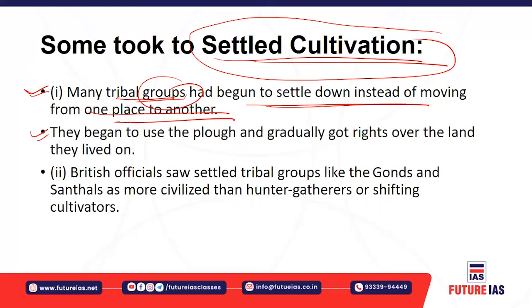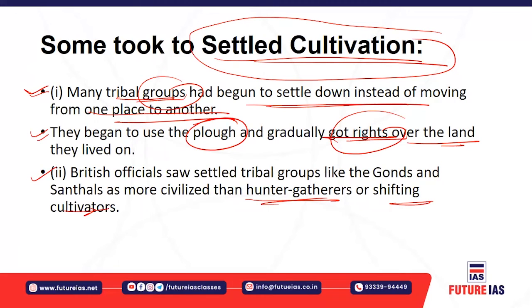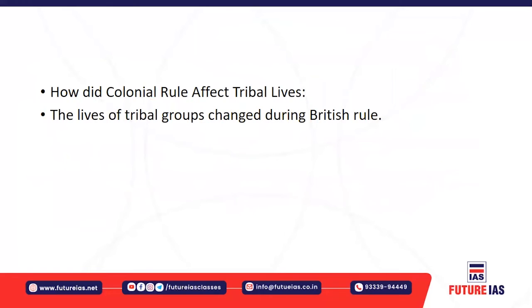Some tribal people began to settle down instead of moving from place to place. They started using plows to cultivate fields, and gradually got rights over the land where they lived. The British saw these settled tribal groups — like the Gonds and Santhals — as more civilized than the hunter-gatherers and shifting cultivators, because they had adopted settled cultivation at one place rather than moving from place to place.